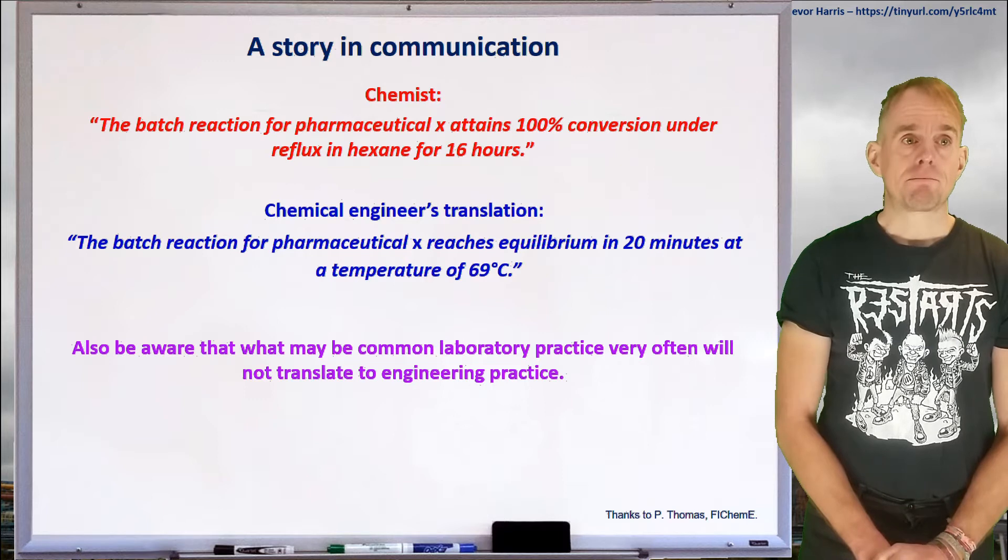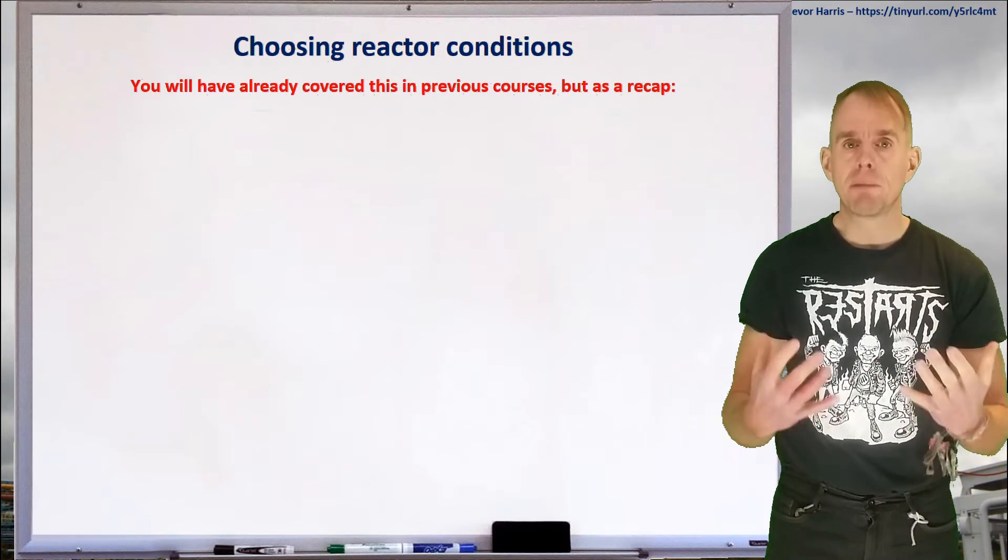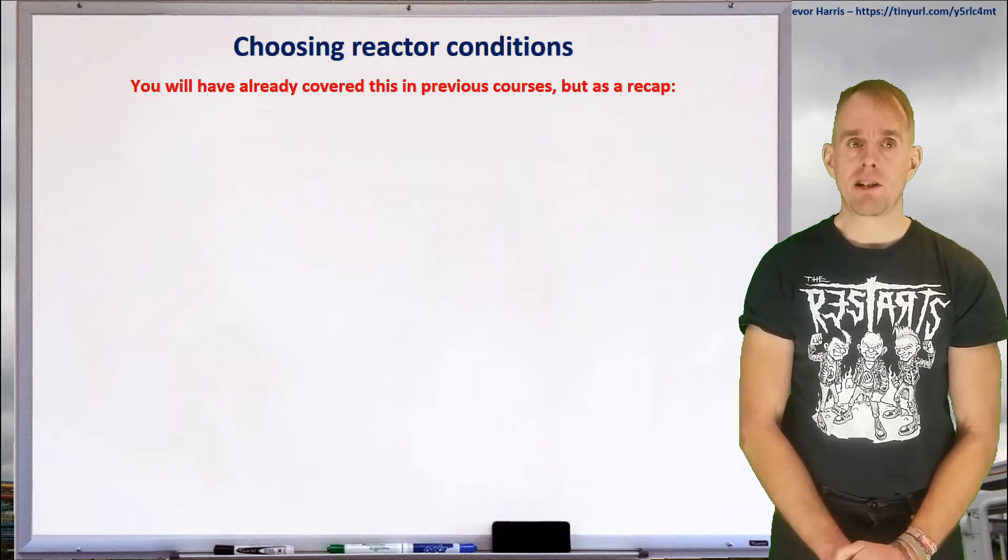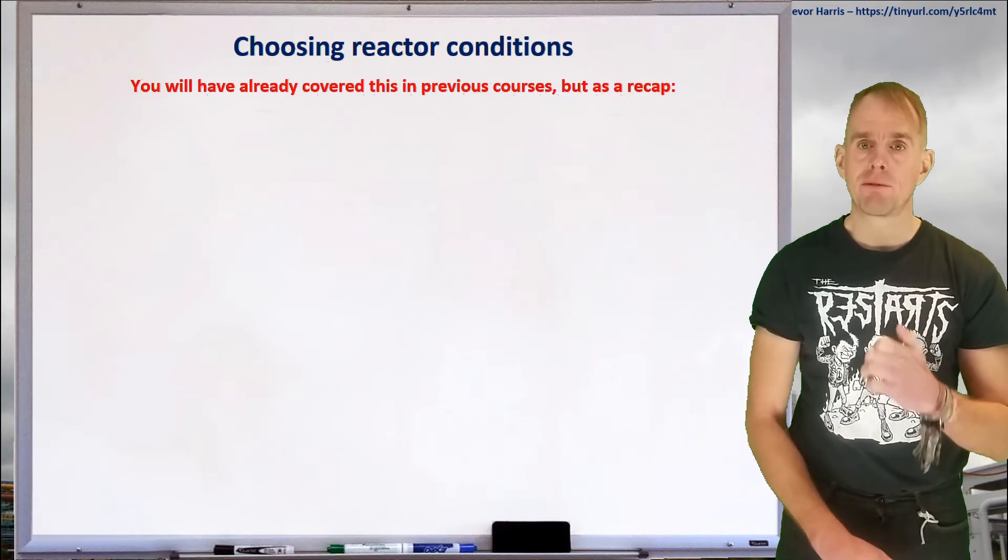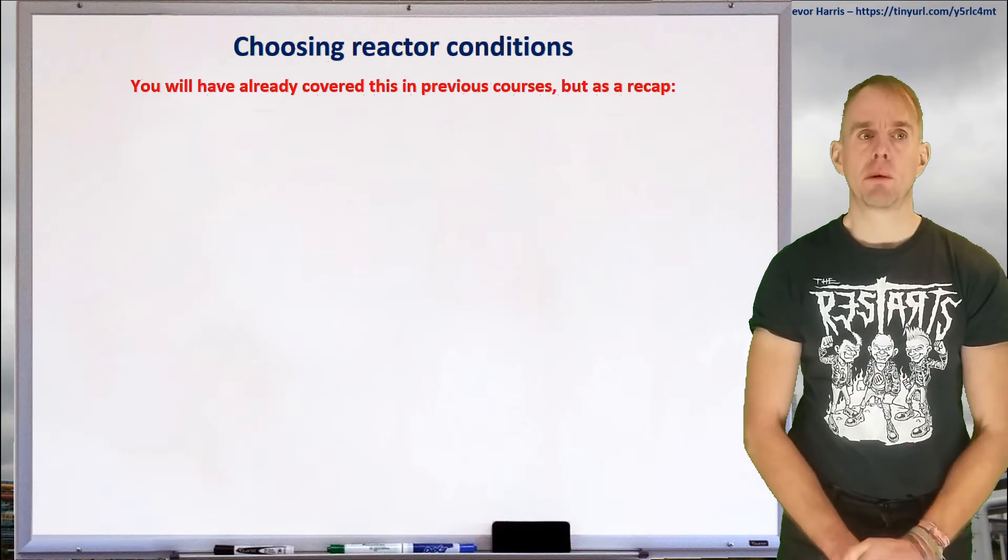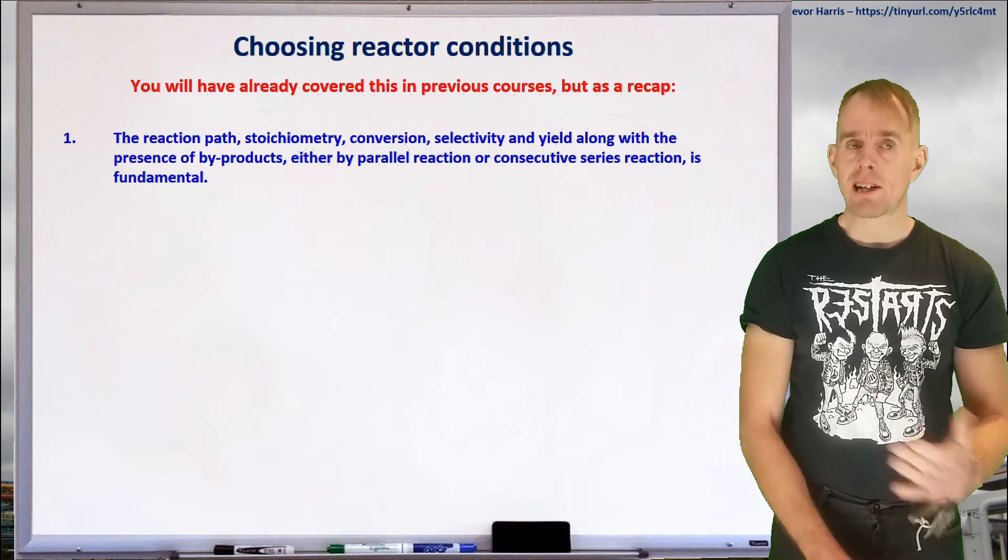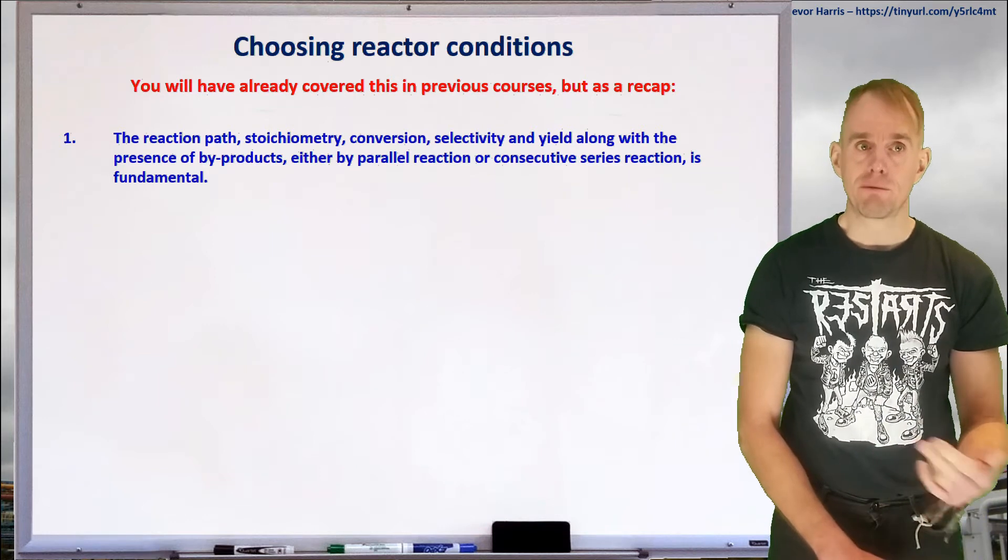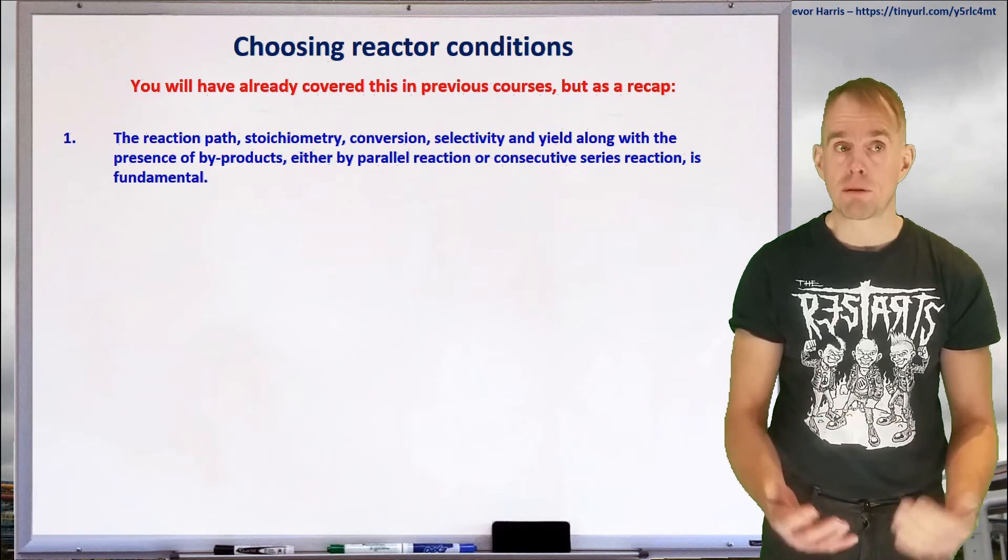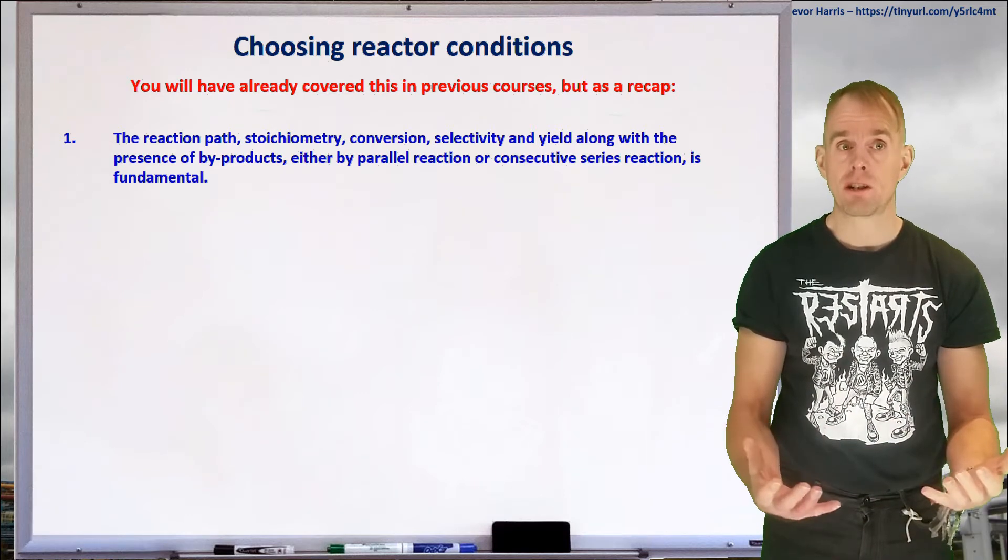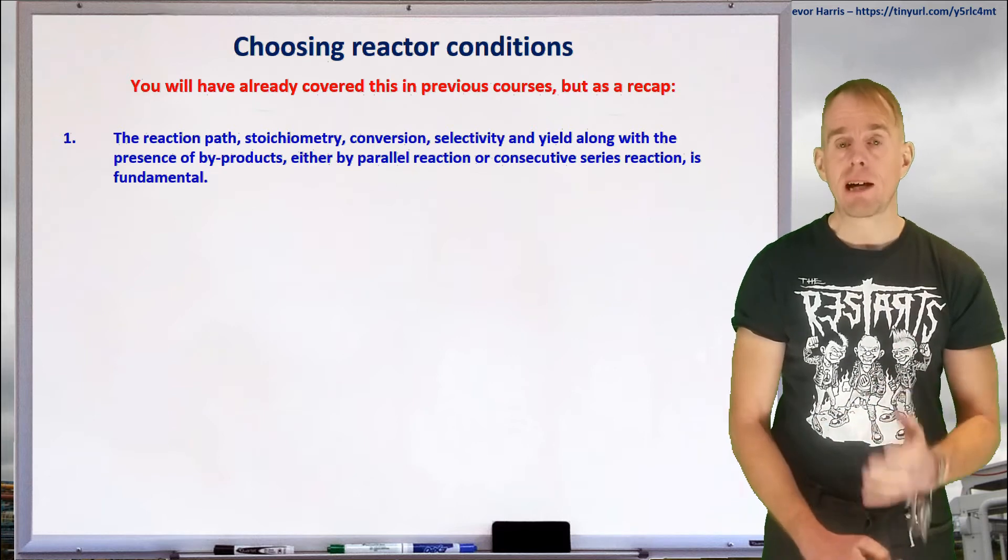Okay, so, let's think about reactors. You will have already, by this point in your chemical engineering education, sat quite a few reactors courses. But let's recap a few key essential things that you will have learnt. First of all, when designing a reactor system, the reaction path, the stoichiometry, the conversion, the selectivity and the yield, along with the presence or absence of by-products, the presence or absence of parallel reactions, or whether your reactions take place in consecutive series reactions, is absolutely fundamental.